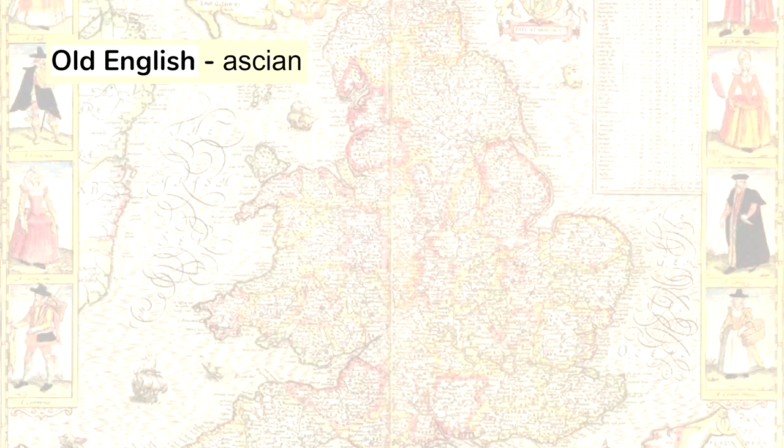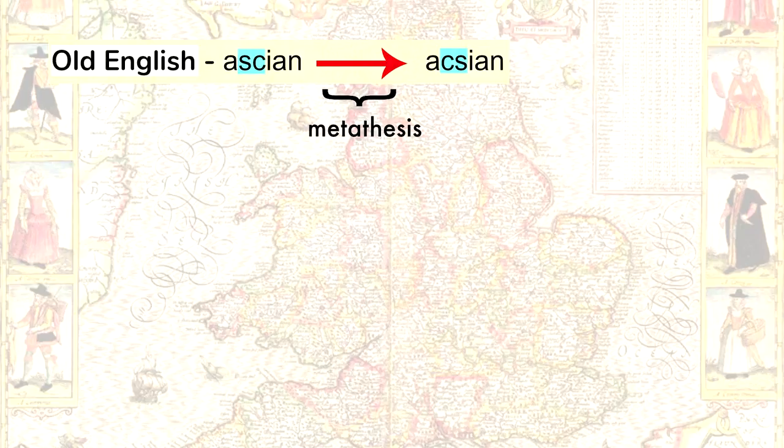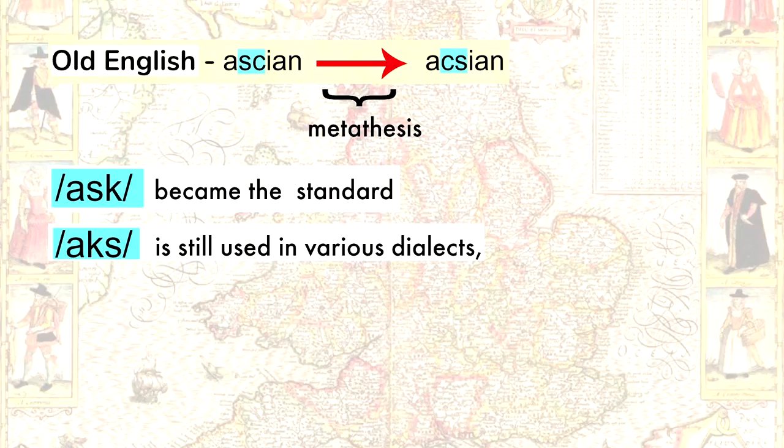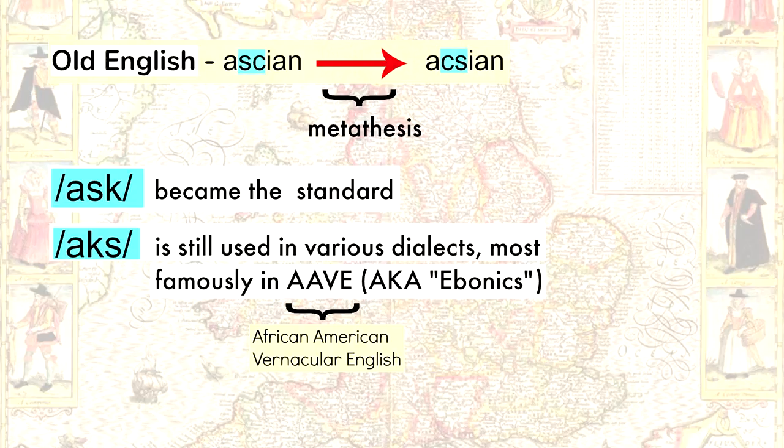Eventually, 'ask' became the standard pronunciation, but 'axe' is still common in various dialects — most famously in African-American Vernacular English, also known as Ebonics. But it's also used in some other dialects in the American South, as well as some dialects in England.